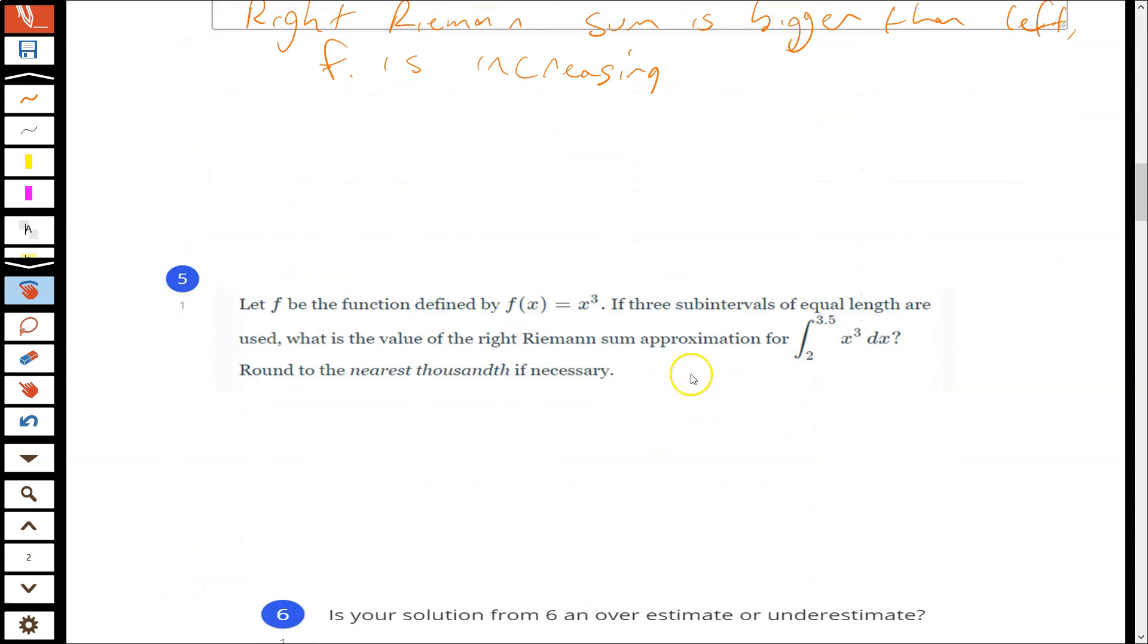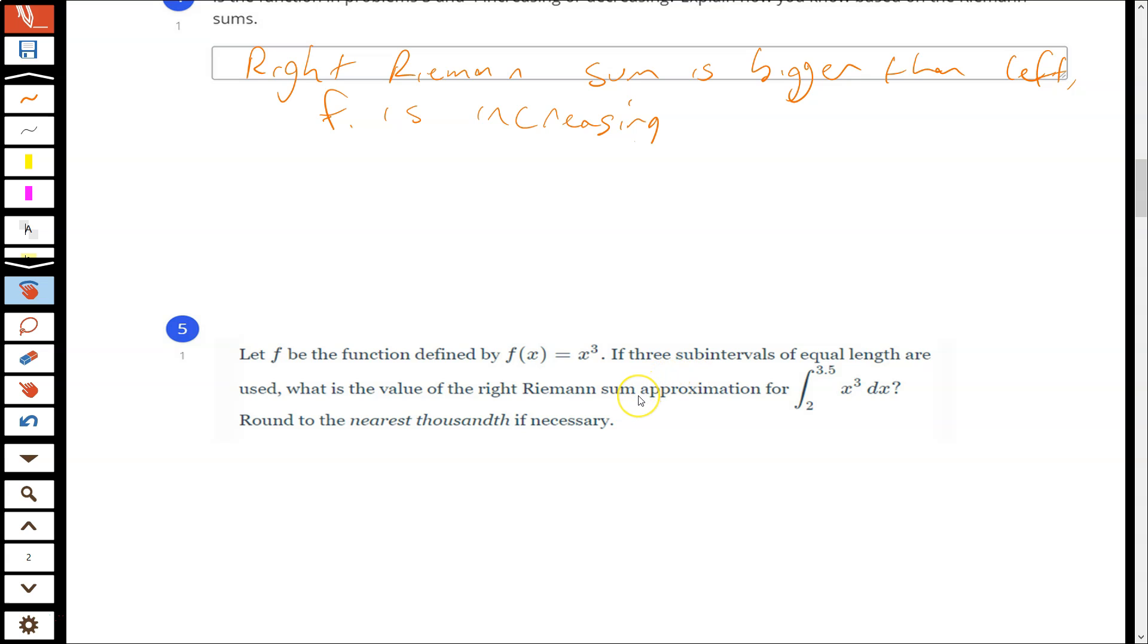Last problem here, or last two problems. We are looking for a right Riemann sum for this function from 2 to 3.5. Our first step is going to be to figure out how many subintervals we're going to use. We want three subintervals of equal length. We could subtract the bounds and divide by 3. This gets us 1.5 over 3, which is 0.5. So we want subintervals of 0.5. We can actually just make a table here: 2, 2.5, 3, 3.5. That gets us our three subintervals.